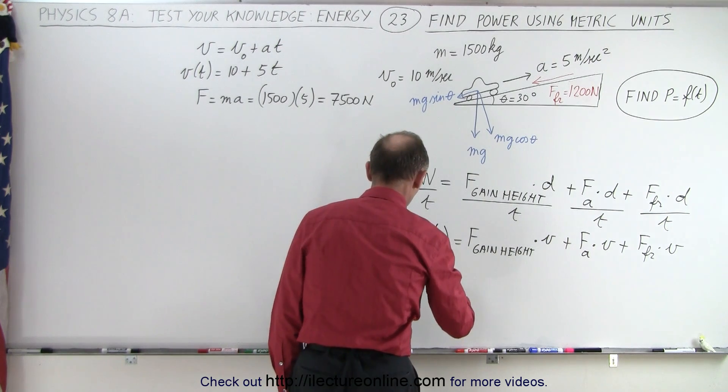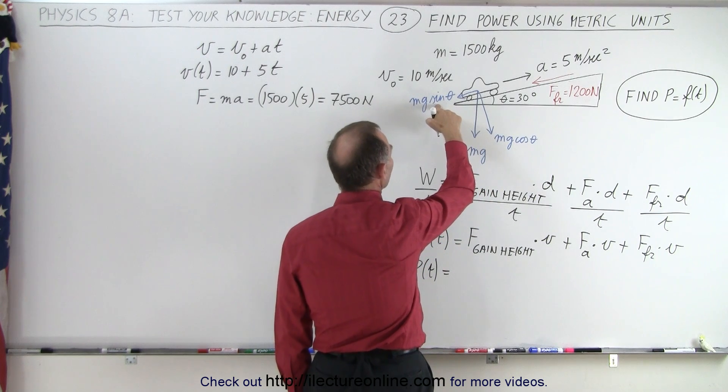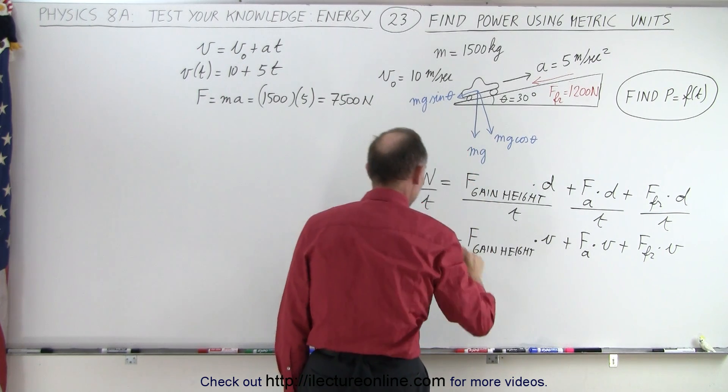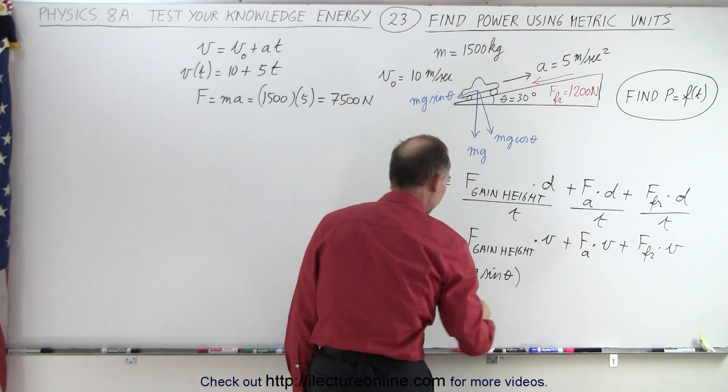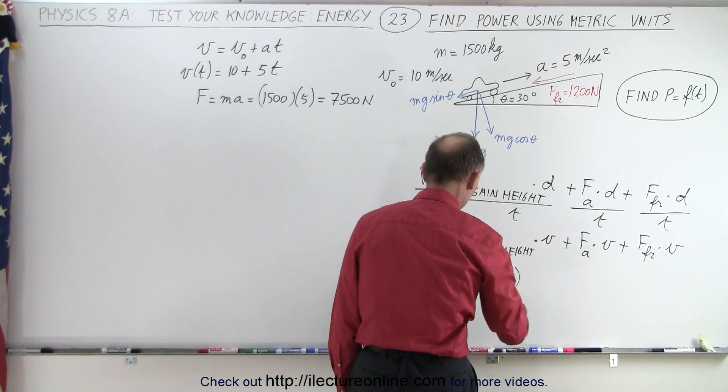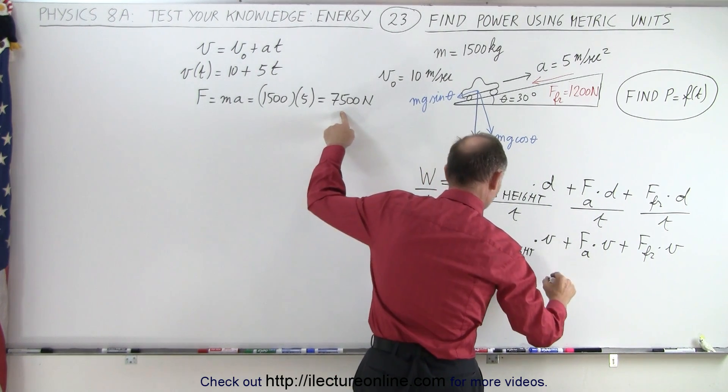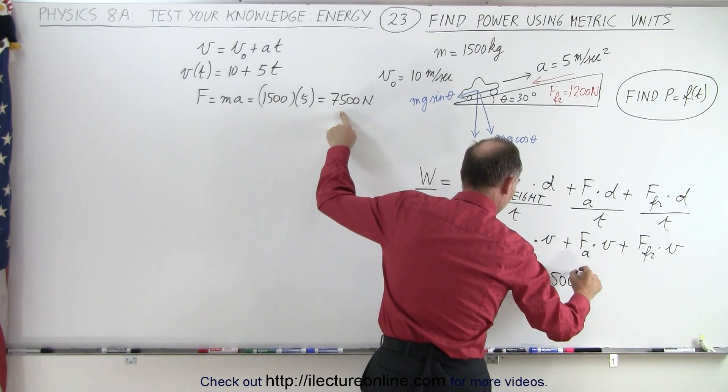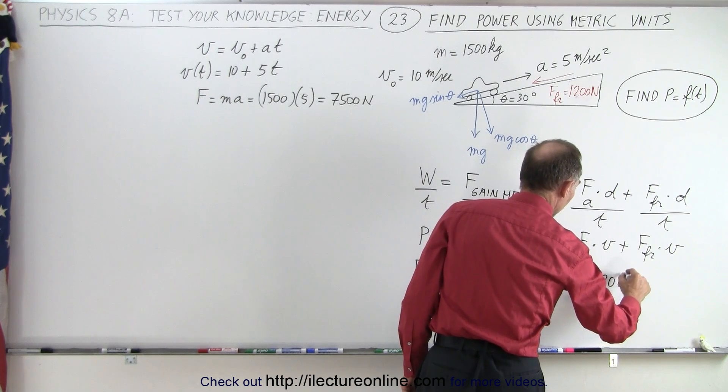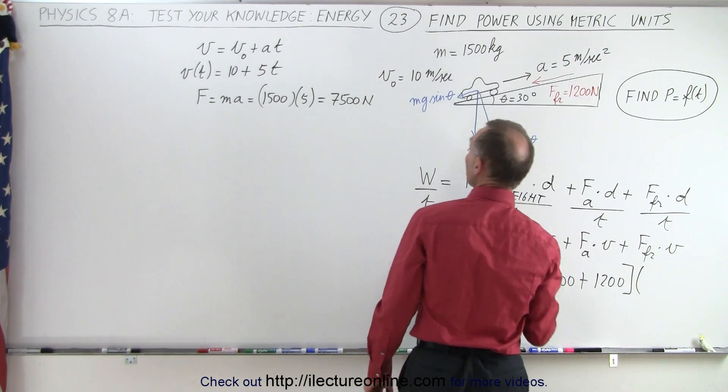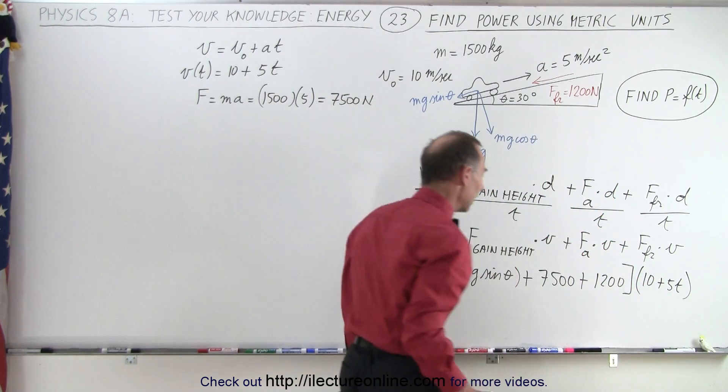Let's go ahead and plug that in. So the power as a function of time is equal to the force to gain height, which is mg times the sine of theta, times velocity. Plus the force to overcome acceleration, which is 7,500 newtons, plus the force to overcome friction, which is 1200 newtons, and the whole thing multiplied by v. Now v is 10 plus 5t.